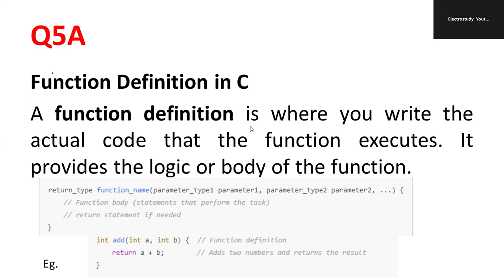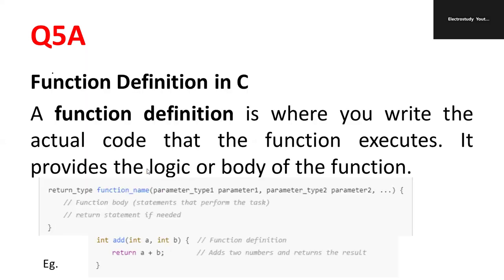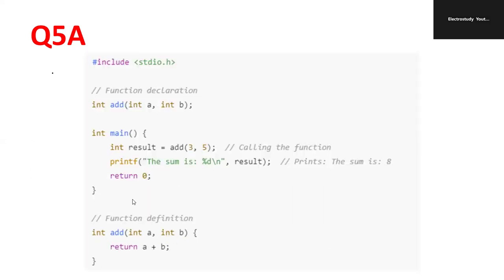Now function definition. Function definition is where you write the actual code that the function executes. Then, it provides the logic or body of the function. Now, look at this. A function name everything we are going to declare. Later, you can see int add int a comma int b. Then, return a plus b. So, add function will be operated. It's a user defined function. You will be getting the sum of two variables a plus b. This is actually the function definition.